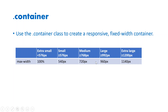Based on the device size it will automatically adjust the container size. If the device size is less than 576 pixels, it will occupy the complete width — 100%. If the device size is greater than 576 and less than 768 pixels, the container size will be 540 pixels. If greater than 768 and less than 992 pixels, it will be 720 pixels. If greater than 992 and less than 1200 pixels, it will be 960 pixels. If greater than 1200 pixels, the size will be 1140 pixels.